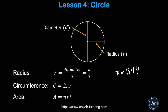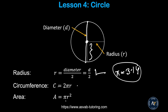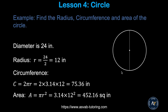Now we'll learn how to find the area and circumference of a circle. From one side to the other through the center is called the diameter, and half of the diameter is called the radius. The radius equals diameter divided by 2. The circumference equals 2 times pi times radius, and the area equals pi times radius squared, where pi equals 3.14.